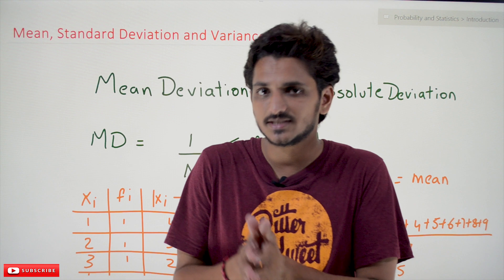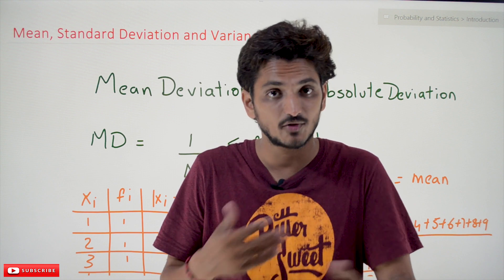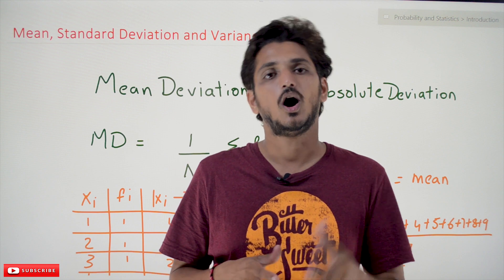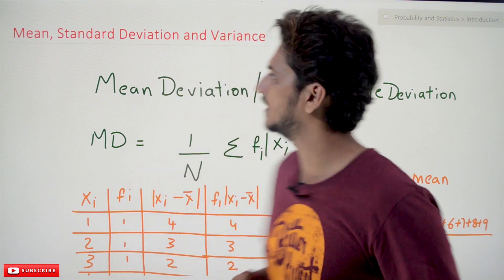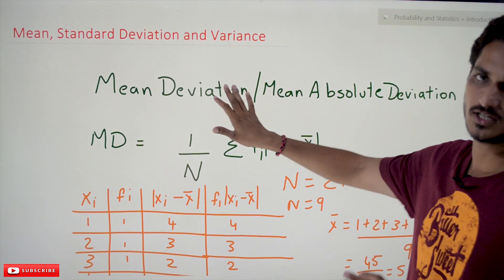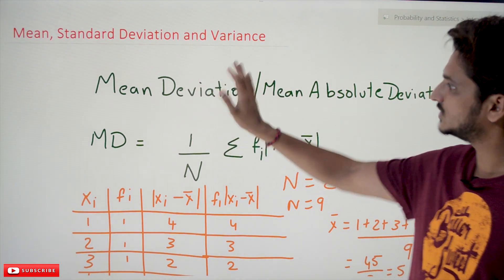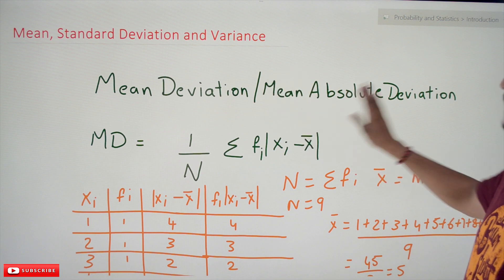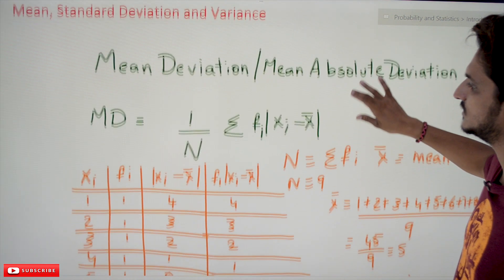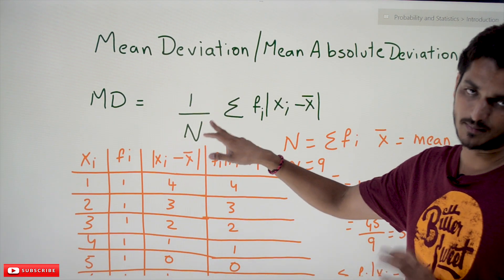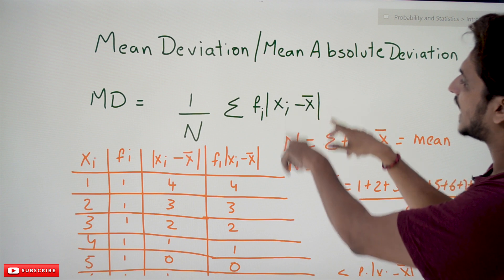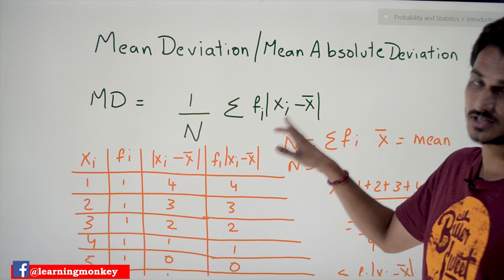Mean deviation and standard deviation are other ways to identify the measure of dispersion. The first example is mean deviation, which is also called mean absolute deviation. To find this: MD is equal to 1 by N, summation of Fᵢ multiplied by the absolute value of (Xᵢ minus X̄). This is the equation to find the mean absolute deviation.